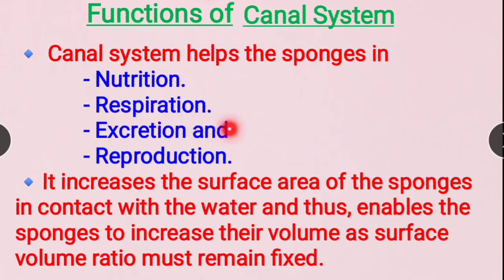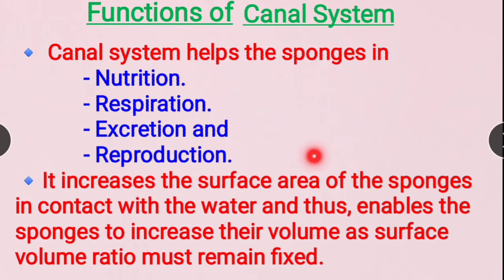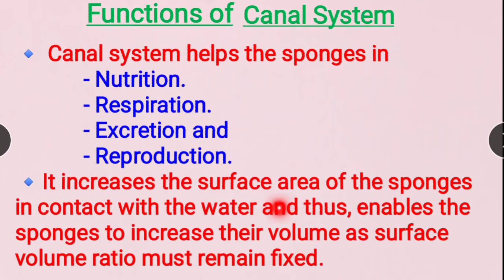For excretion, waste materials including nitrogenous waste in solid form (feces) are removed. For reproduction, the water current carries sperms from one sponge to another, helping them meet the ovum for fertilization. The canal system also increases the surface area of the sponge when in contact with water, while the surface-to-volume ratio remains fixed.